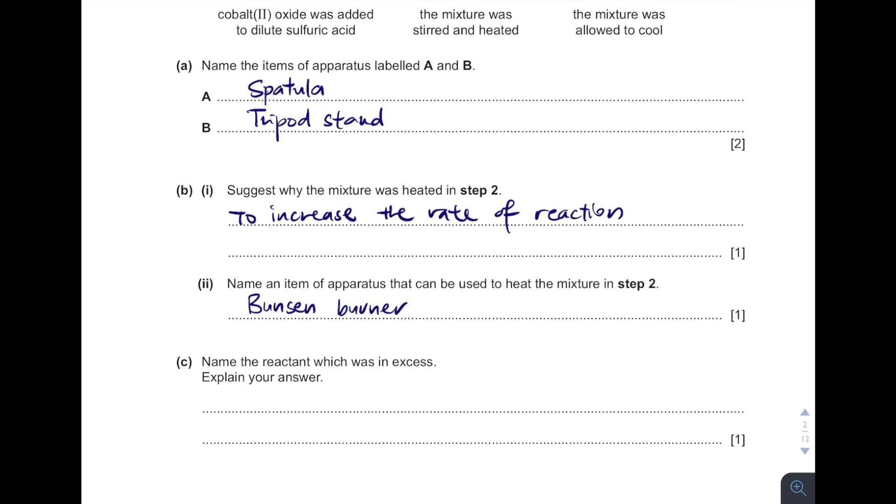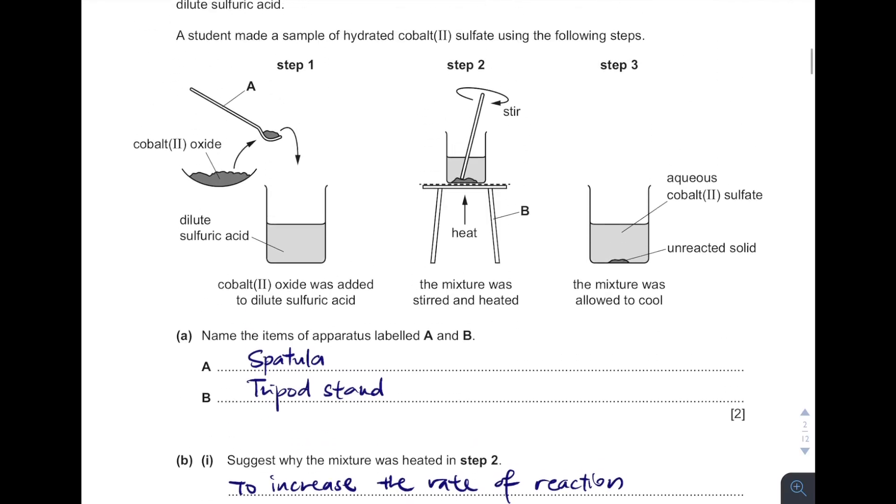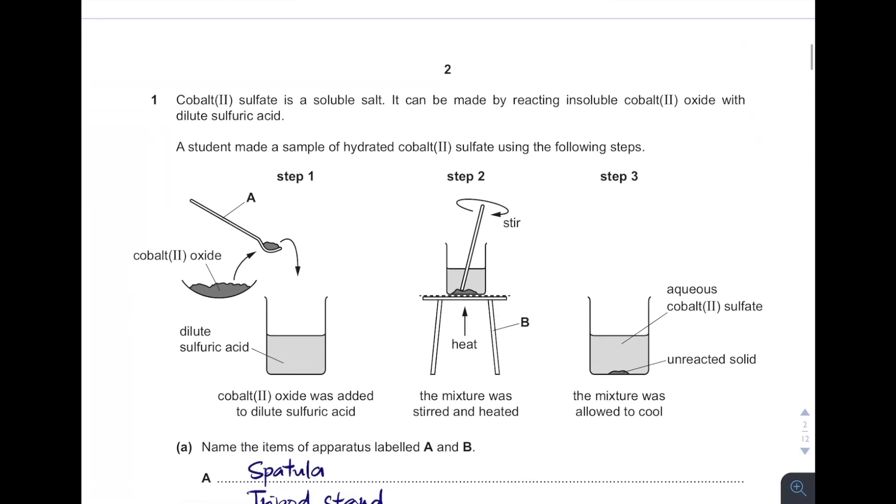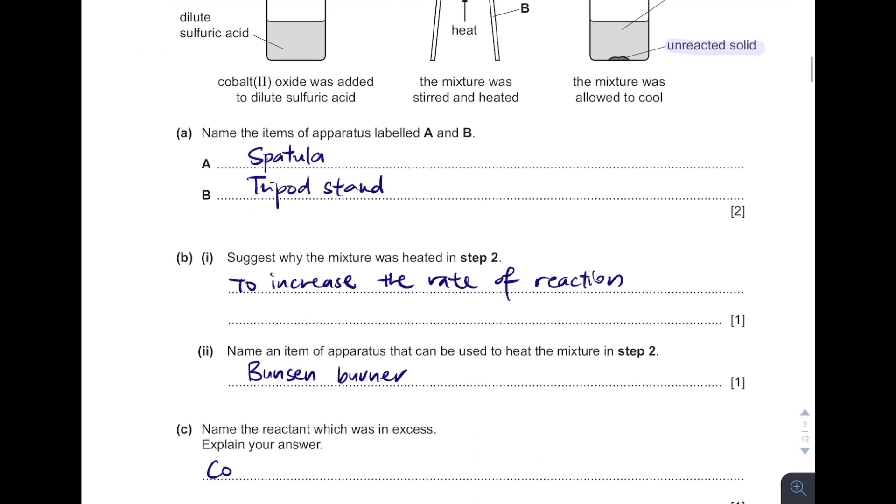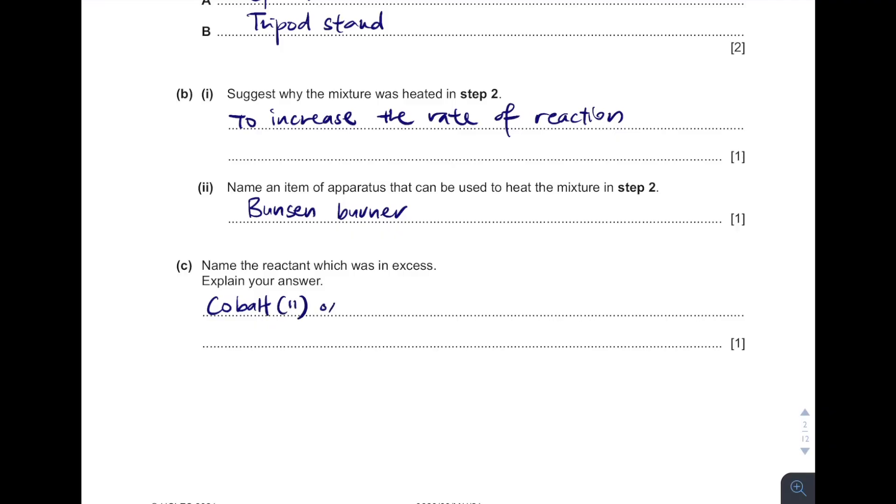Next one, name the reactant which was in excess and explain your answer. Which one will be in excess? The one that's left over, you see, is the unreacted solid. So which one is the solid? Copper 2 oxide, isn't it? And acid is in the form of liquid. So you see solid is the one that's in excess. From here we know answer is cobalt 2 oxide. Why? Because it is the solid left at the end of reaction.